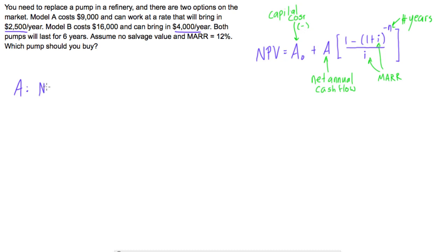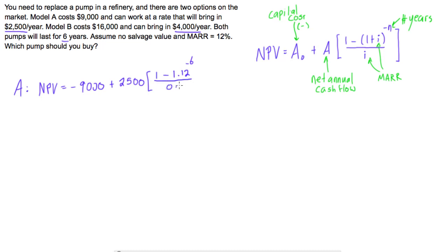For model A, the net present value equals negative $9,000 plus 2,500 times the annuity factor: 1 minus (1 + 0.12) to the power of negative 6, all over 0.12. Here i is 0.12 for 12% and n is 6. Simplifying, we have negative $9,000 plus 2,500 times the annuity factor — just punch this into your calculator — which gives $10,278.52.